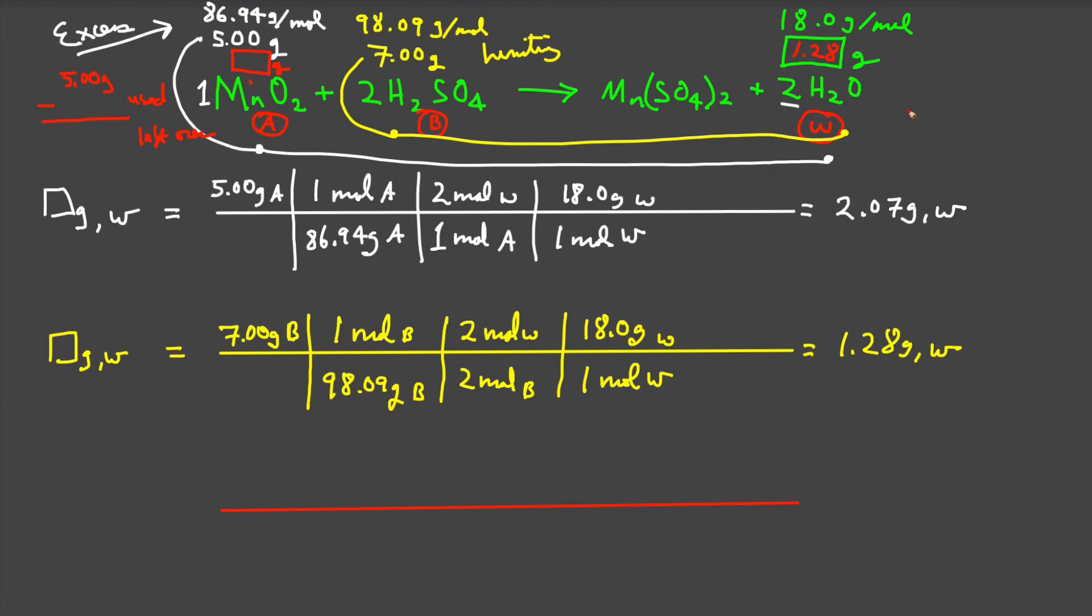The question then reads this. How many grams of this can we make starting with 1.28 grams of water? We will convert grams of water to moles of water. Moles of water will convert to moles of manganese dioxide. And moles of manganese dioxide, we will determine grams of manganese oxide.